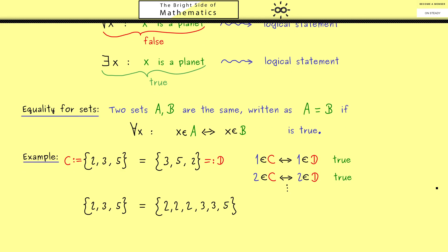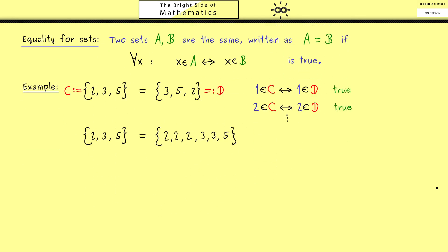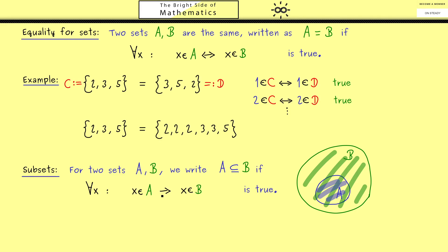Besides the equality sign, we also have the subset sign for sets. The idea is we have a large set B and a smaller set A inside. A contains no other elements than B, but maybe fewer. The symbol we use is the subset relation written like this. The meaning is given with a quantifier: for all x, if x is in A, it is also in B.